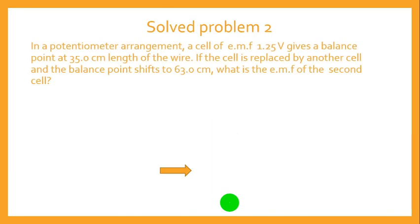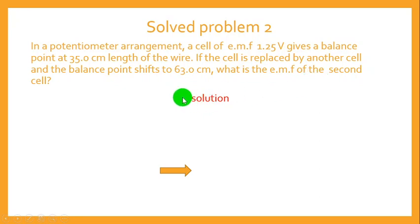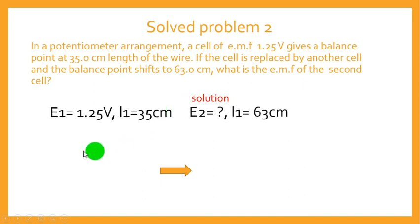The second question: In a potentiometer arrangement, an EMF of 1.25 volts gives a balance point at 35.0 centimeters. So E1 equals 1.25 V and L1 equals 35.0 cm. If the cell is replaced by another cell, the balance point shifts to 63.0 centimeters, so L2 equals 63.0 cm. We are required to determine the EMF E2 of the new cell.